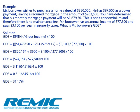Let's look at an example of how to calculate a GDS. Mr. Borrower wishes to purchase a home valued at $350,000. He has $87,500 as a down payment, leaving a required mortgage of $262,500. His monthly mortgage payment will be $1,679.50. Since this is not a condominium, there is no maintenance fee. Mr. Borrower has an annual income of $77,500 and pays $3,100 per year in property taxes. The maximum ratio typically used in the mortgage industry is 32%, meaning that 32% of a potential borrower's gross income may be used to service shelter costs. The GDS has one main purpose: to determine if the proposed mortgage payment is within the lender's maximum GDS ratio. In this case, it is, because it's at 31.17%.